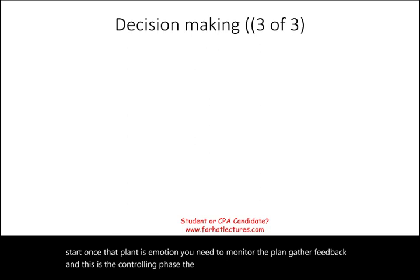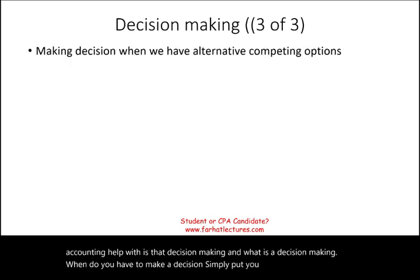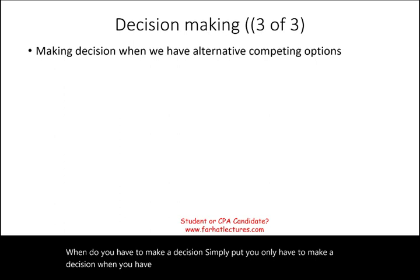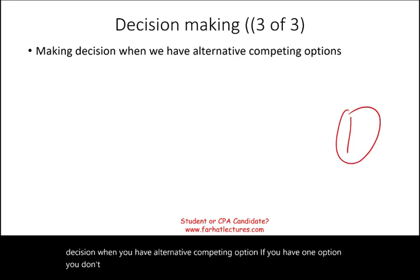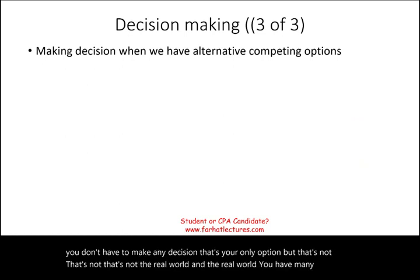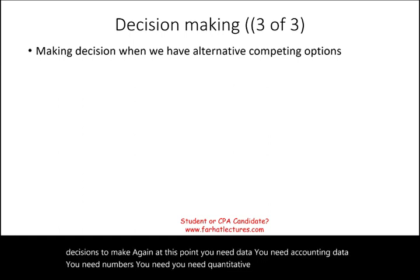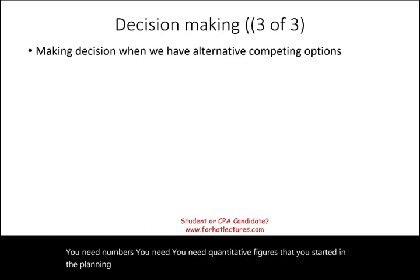The third phase that managerial accounting helps with is decision making. You only have to make a decision when you have alternative competing options. If you have one option, you don't have to decide — that's your only option. But in the real world you have many alternative decisions to make. At this point you need data: accounting data, numbers, quantitative figures collected in the planning and controlling phases. Now you can make a better decision.